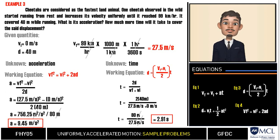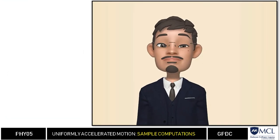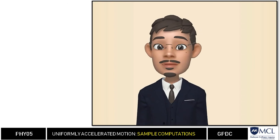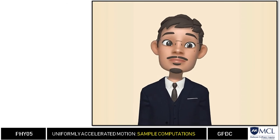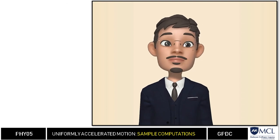Therefore, from our computation, the acceleration of the cheetah is 9.45 meters per second squared while the time it will take to cover the 40-meter displacement is 2.91 seconds. And that's it, we are done. I posted some drills in our BBL. I hope you can find time answering those because you will need these skills as we continue our physics course.